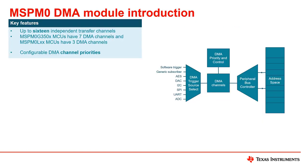The Direct Memory Access Module is a bridge between the bus master and the system peripherals. The DMA performs programmable data transfer between peripherals and memory without CPU involvement. For example, the DMA module can move data directly from the ADC memory to SRAM, increasing the throughput of peripherals.